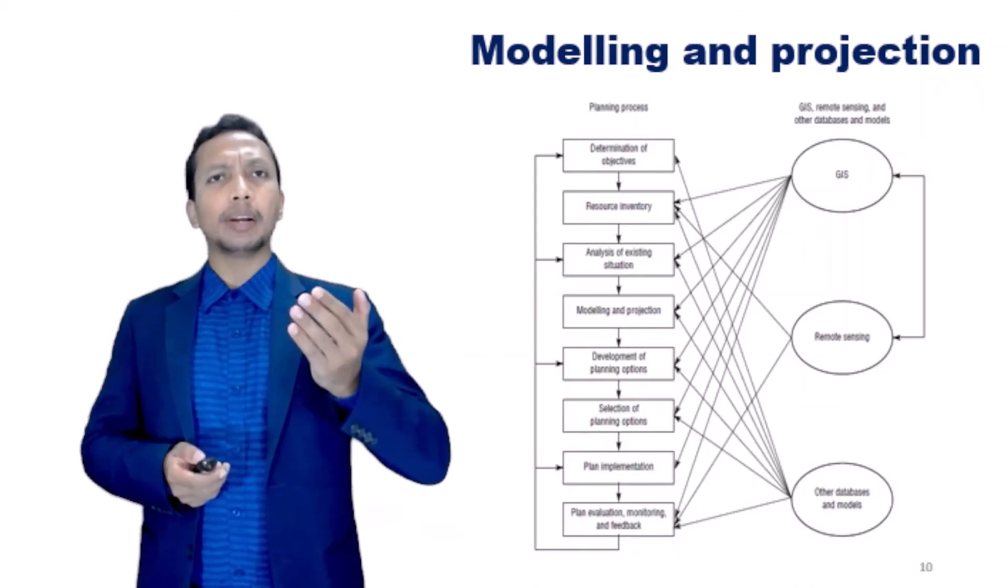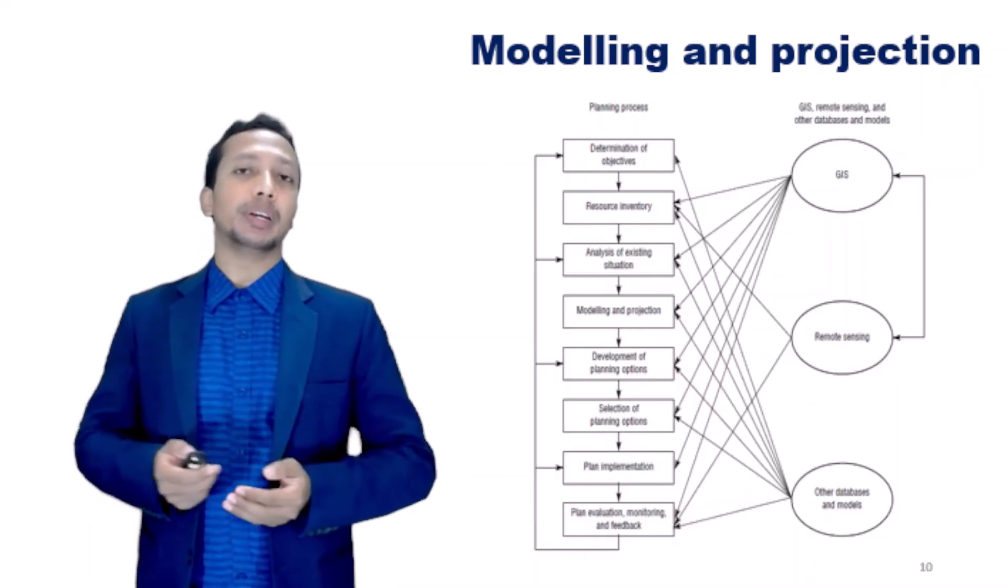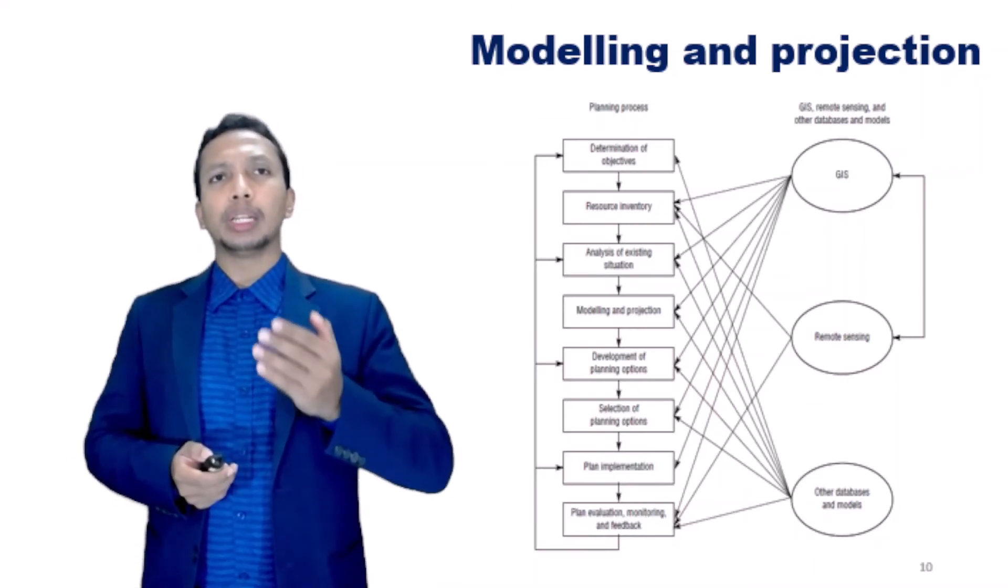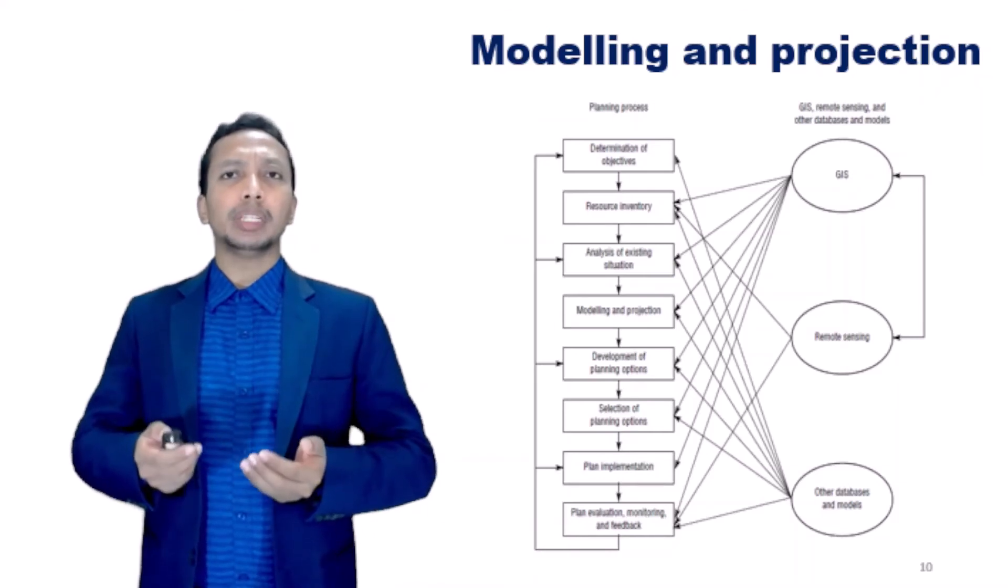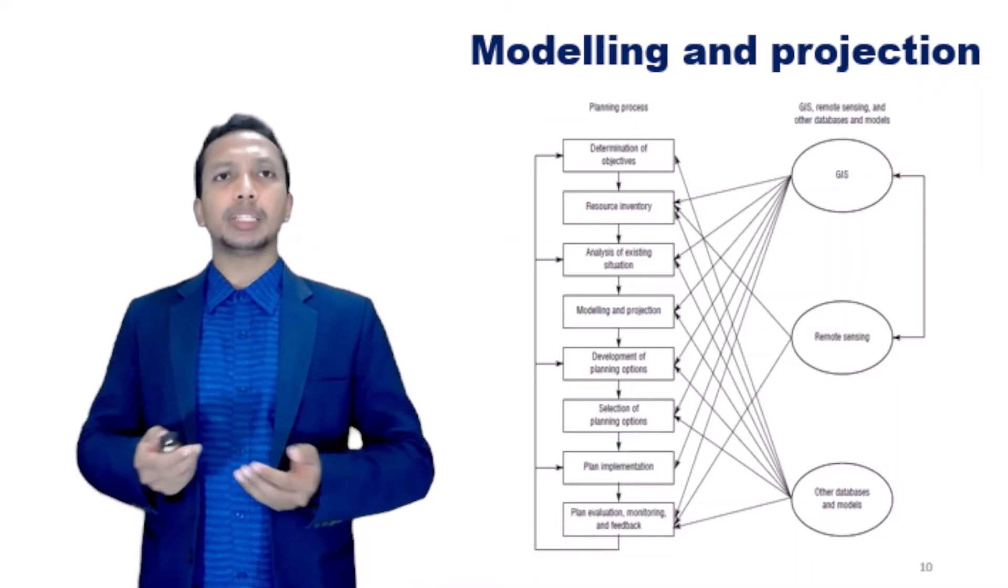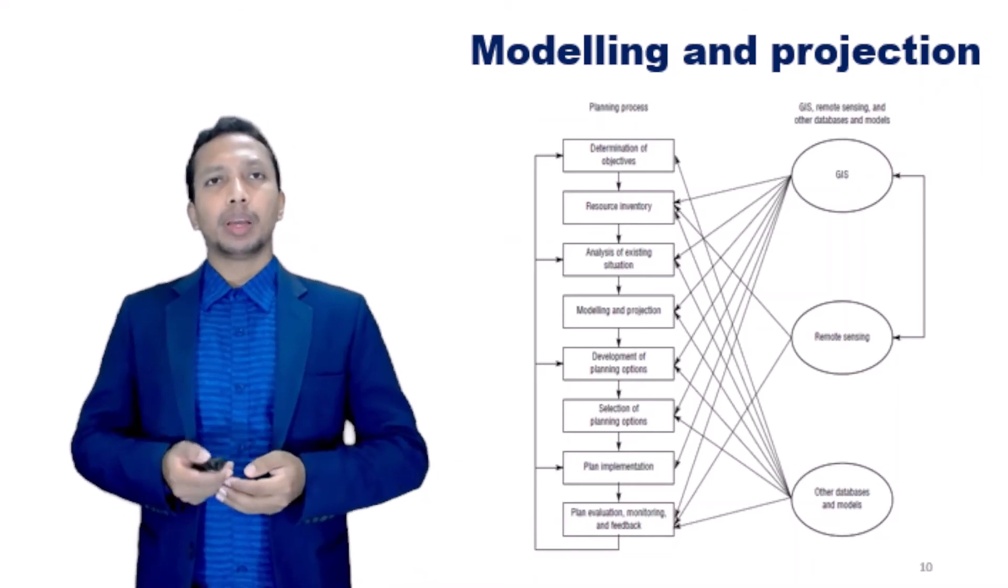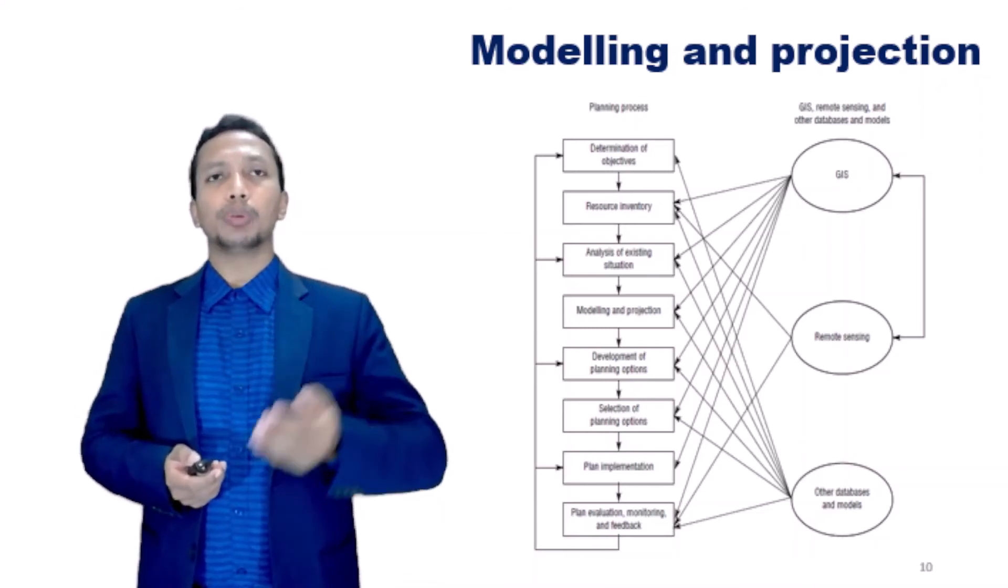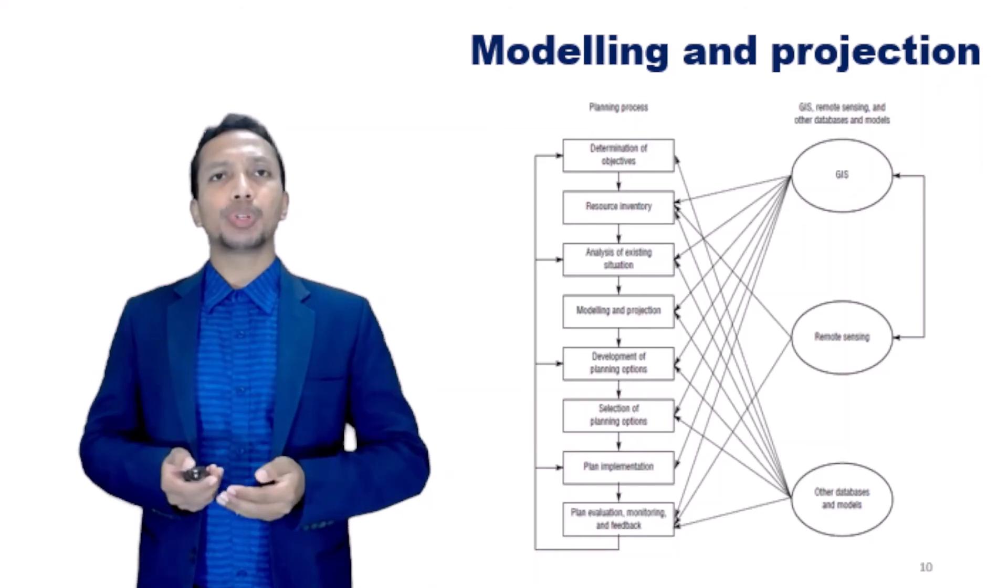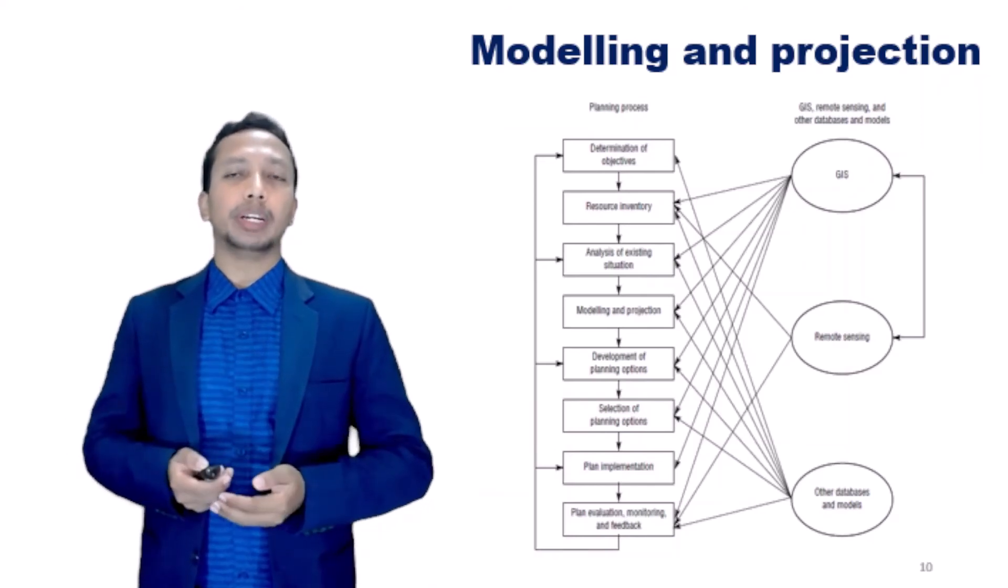GIS can also be used to model different development scenarios. It can show the modeling results in graphic form, making them easy to communicate with the decision makers. Planners can use such information to formulate different planning options and help guide future development so that they avoid such conflicts.